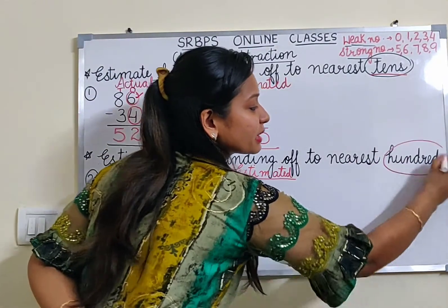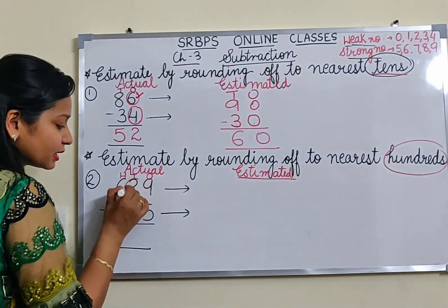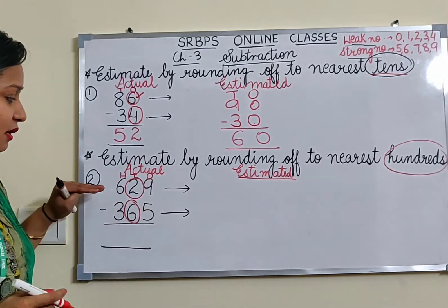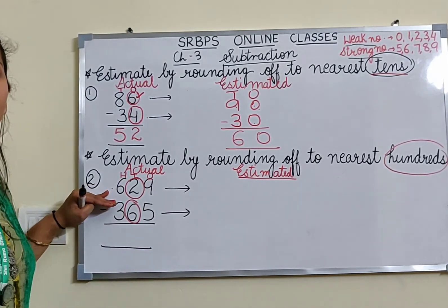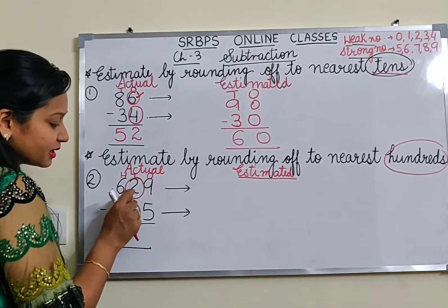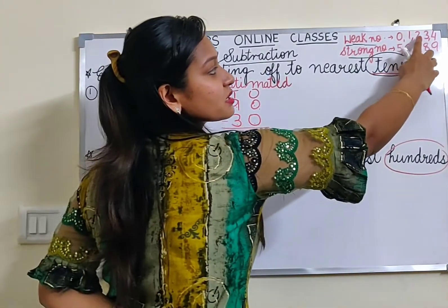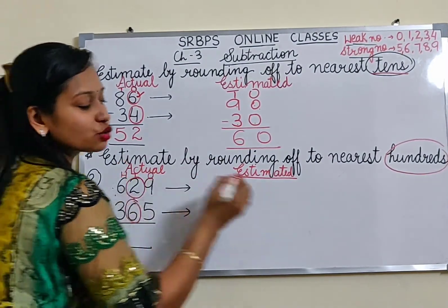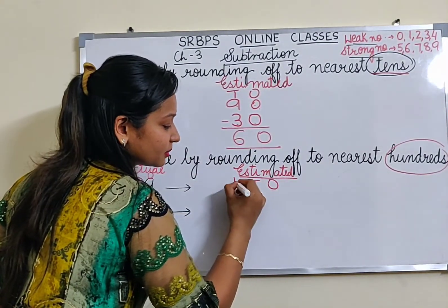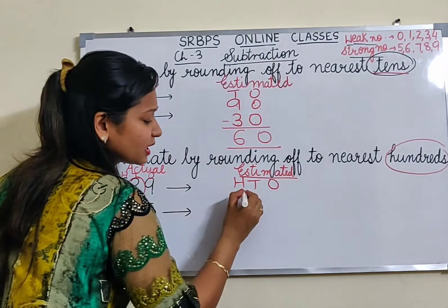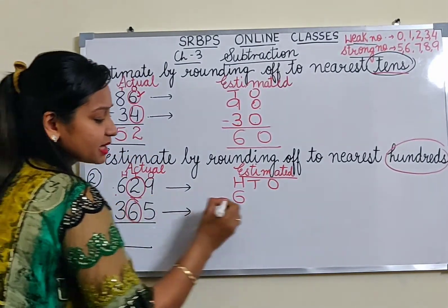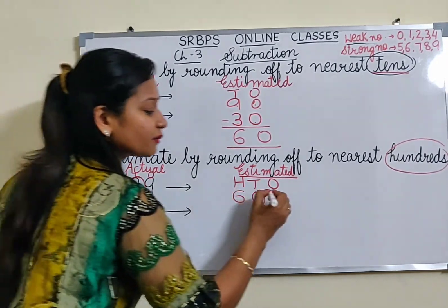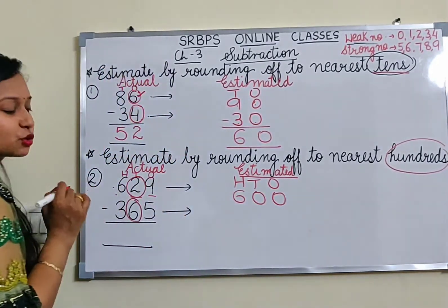We will circle the number on the right-hand side of the hundreds digit. The number there is 2, and 2 comes in the weak number list. A weak number does not add anything to the digit before it. So 6 will remain 6, the number inside the circle will become 0, and the number after the circle will also become 0. So 629 rounds off to 600.